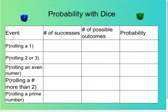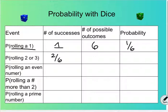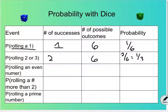Probability with dice: if you're rolling one die, or a number cube, the probability of rolling a one — there's only one way to get a one, and there are six total outcomes, so that's one sixth. Rolling a two or three is two out of six, or one third. Please notice I'm leaving it as a fraction; decimals are big and ugly in this case. Rolling an even number — even numbers are two, four, and six — so that's three out of six.